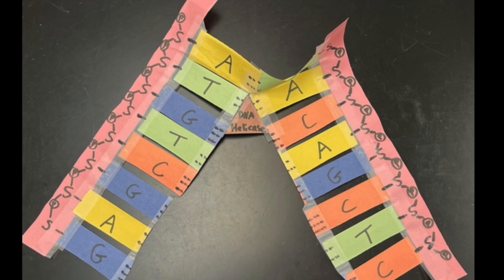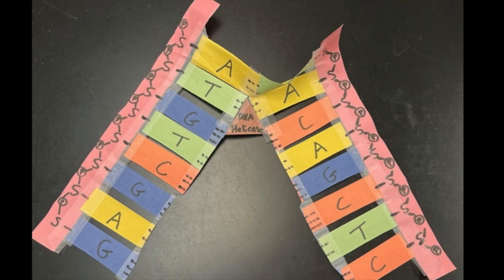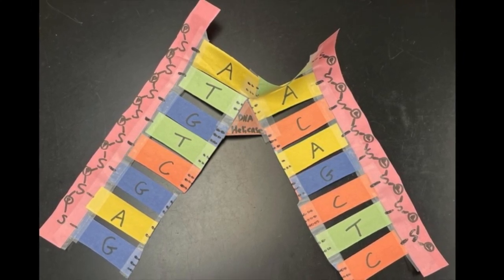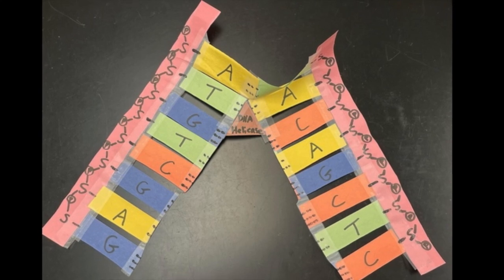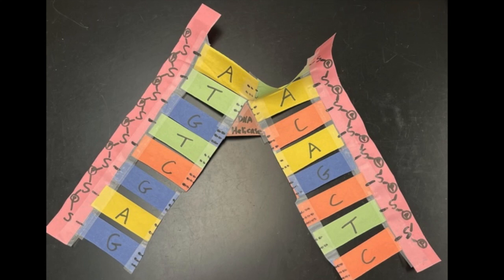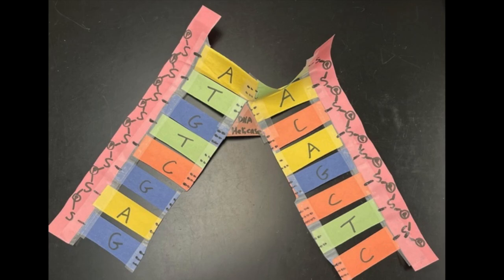And then you're going to tape the helicase triangle. I made a triangle because it'll fit right nice in there to demonstrate the unzipping. And that'll show that either side is now opened up. This is an origin of replication and it looks like a fork, so we can call this location. Yeah, it's not just the origin, but you see it forms a replication fork.